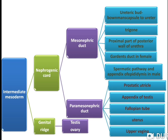Paramesonephric duct further differentiates into prostatic urethra, appendix of testis, fallopian tube, uterus and upper vagina.